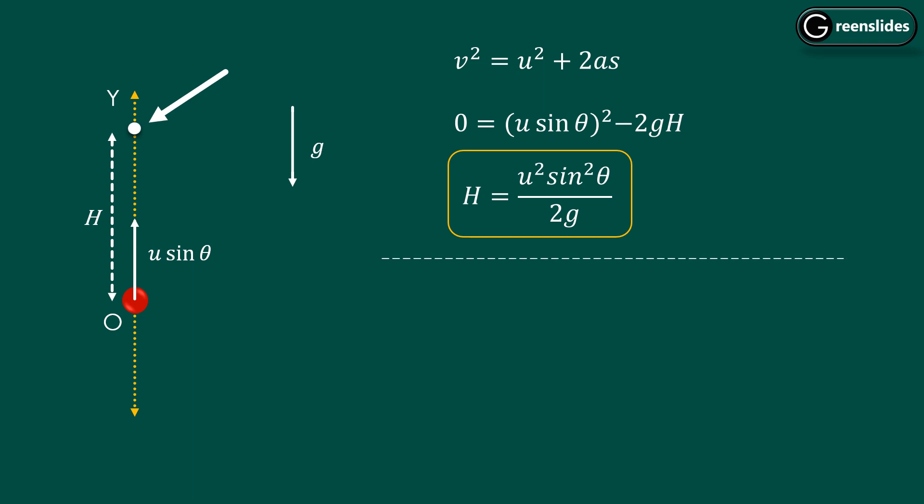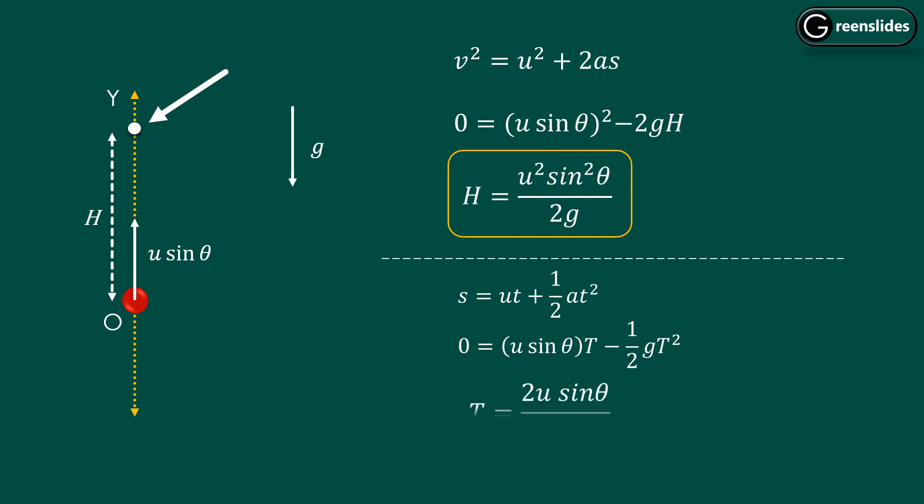Now let's calculate the time of flight — the time for which the ball is in the air. During this time, the Y coordinate goes from zero to maximum and back to zero, so the net displacement in Y is zero. Applying S = UT + ½AT²: 0 = U sinθ · T − ½GT². Rearranging, we get T = 2U sinθ / G. This is the time of flight.